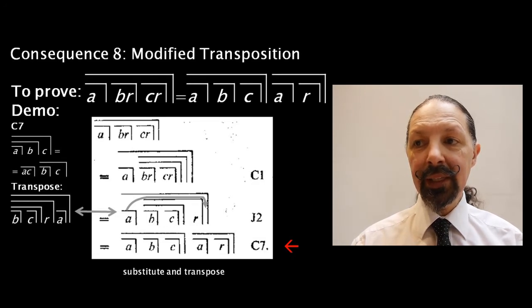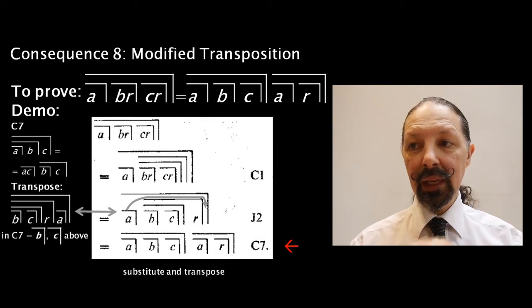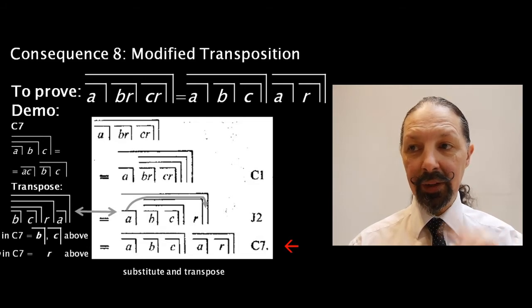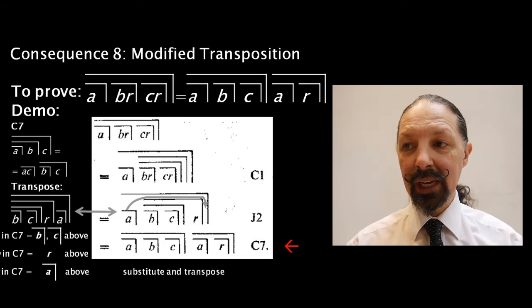So in C7, the A term is equivalent to B mark C mark. The B term is equivalent to the R. That's in the next shallower, the middle space, the next shallowest space. And the C term in C7 is equivalent to A mark.